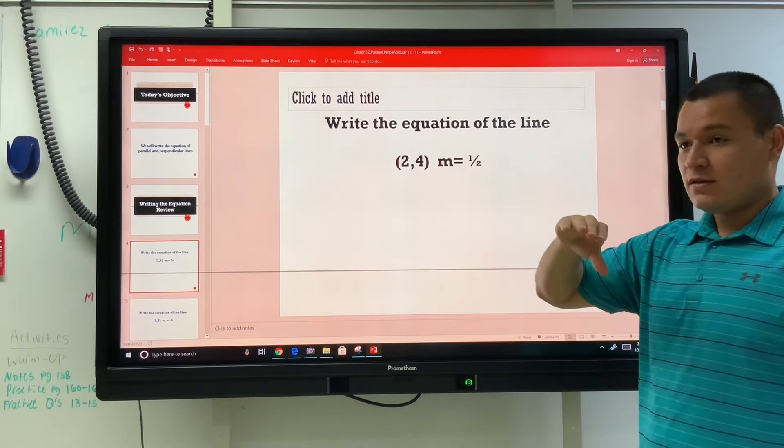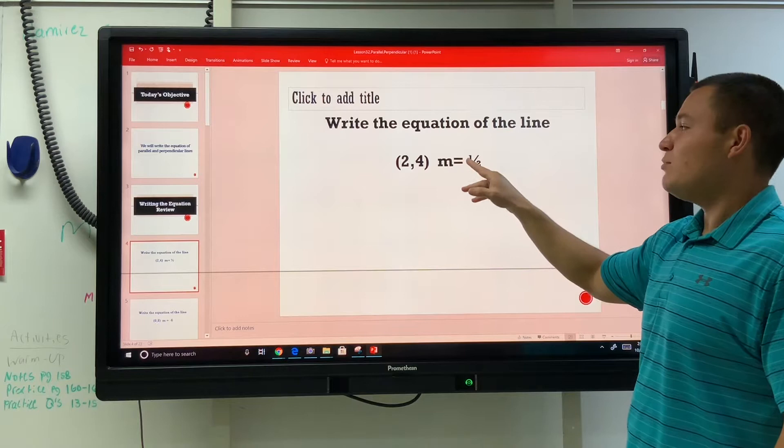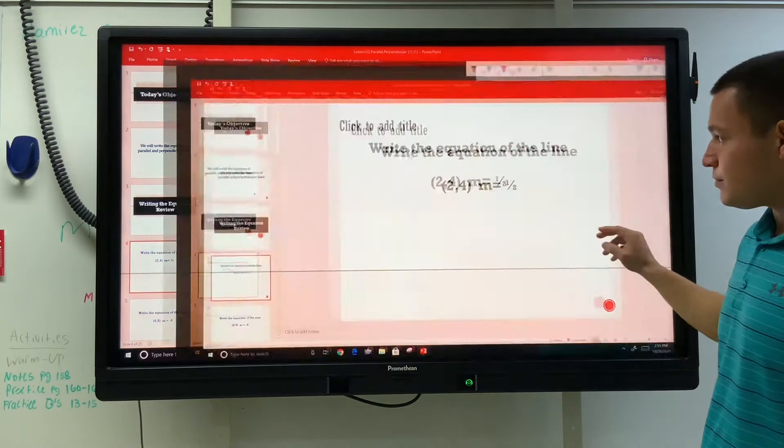Please, in your journal, write the equation of the line. In your part you'll put review, given, you'll say given parenthesis 2 comma 4, and a slope of 1 half, the equation is,